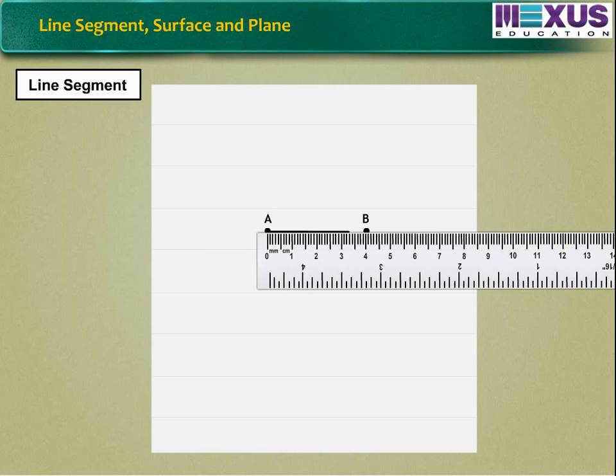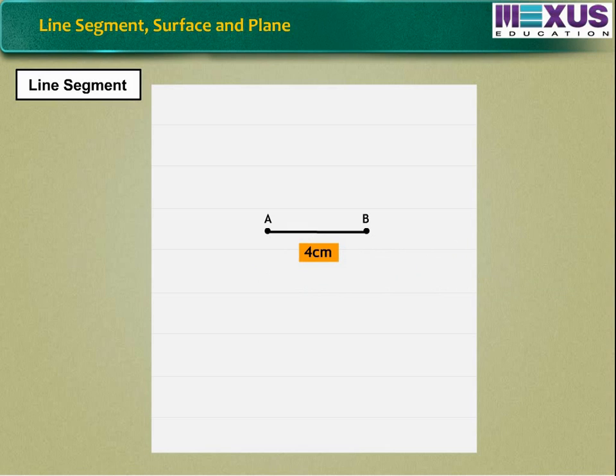For example, AB equals to 4 centimeters. That means the length of line segment AB is 4 centimeters. It can be measured using a ruler.